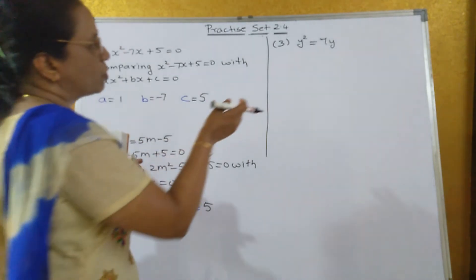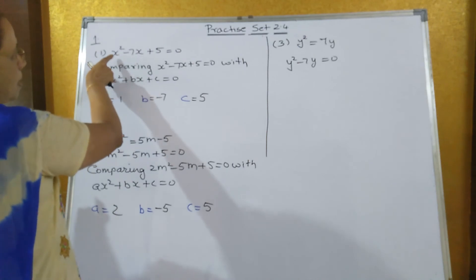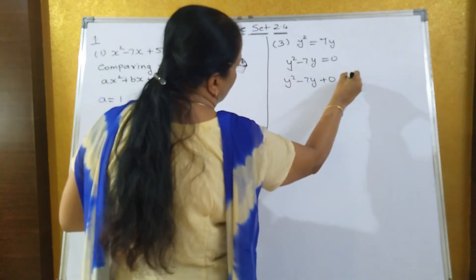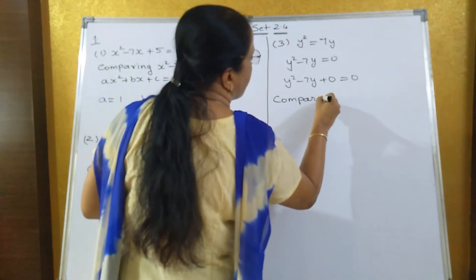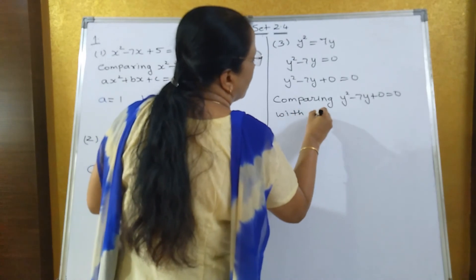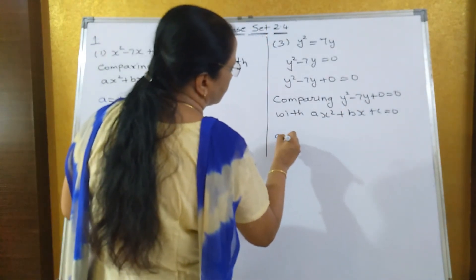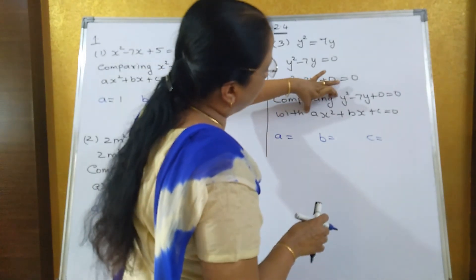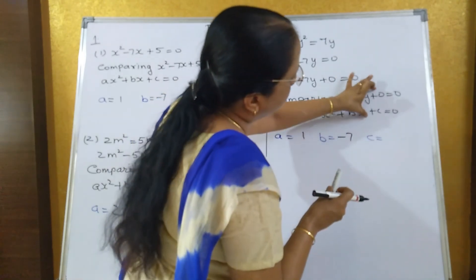Same way for the other one. Y² — bring the 7y to this side. What you will get? Y² - 7y = 0. Now, in a quadratic equation there are 3 things: Ax² + Bx + C. C is not there, so put a 0 over there: Y² - 7y + 0 = 0. Comparing with Ax² + Bx + C = 0, A is equal to 1, B is equal to minus 7, and C is 0.